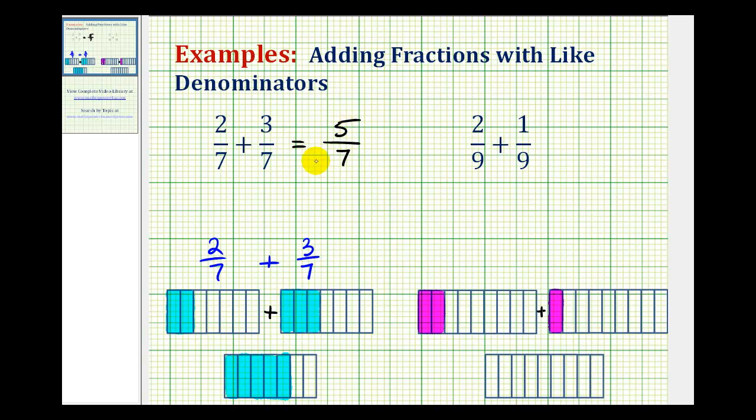Once we find the sum, we need to check to see if this fraction will simplify. But since 5 and 7 don't share any common factors other than 1, this does not simplify.